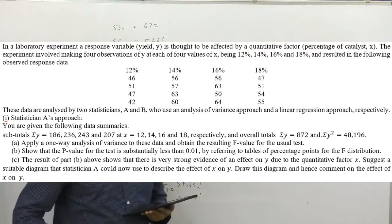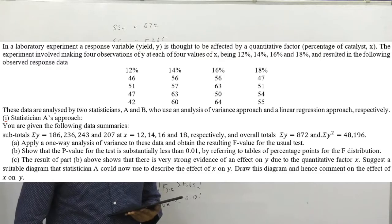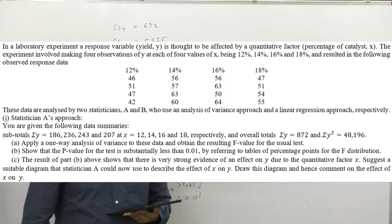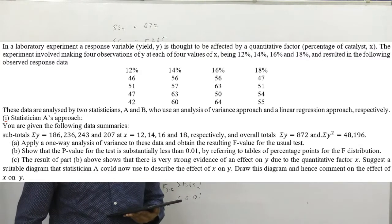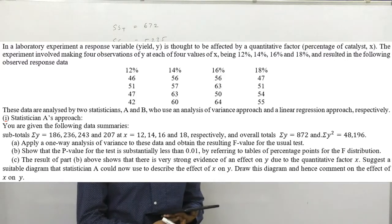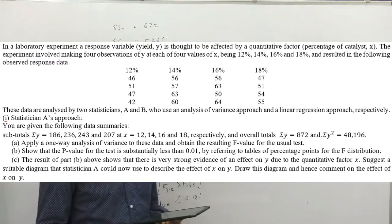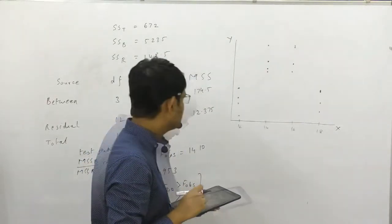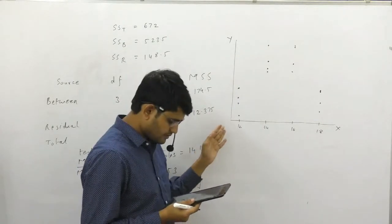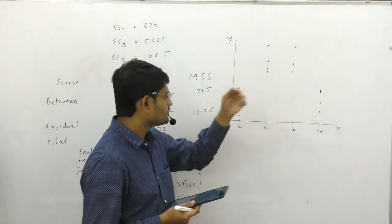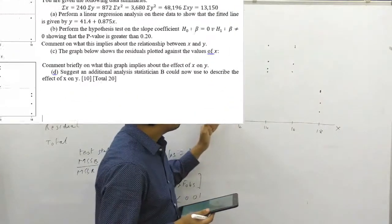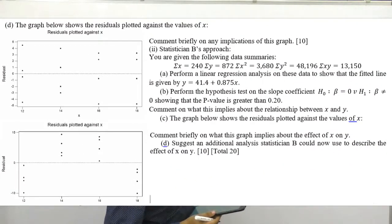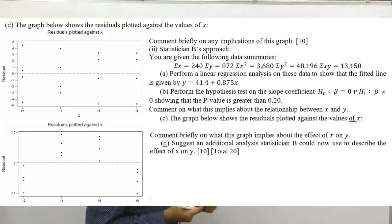The result of part B shows very strong evidence of an effect on Y due to X. Suggest a suitable diagram that statistician A could use to describe the effect of X on Y. We can draw a scatter plot with X on one axis and Y on the other. From the scatter plot, as the values of X increase, first the value of Y increased, then it became constant, then decreased. So there is a curved relationship — this is not a linear relationship between X and Y.